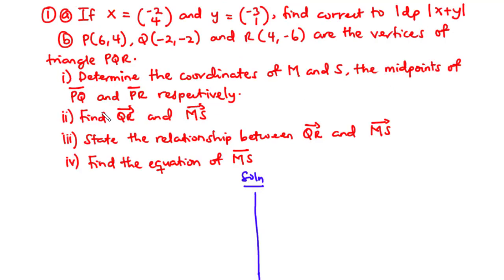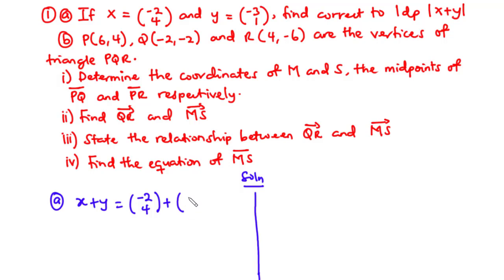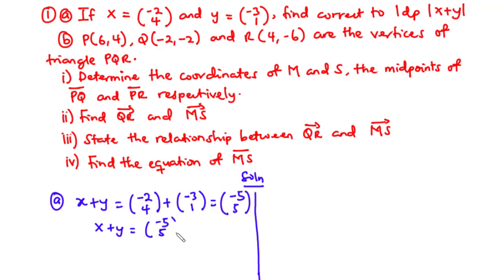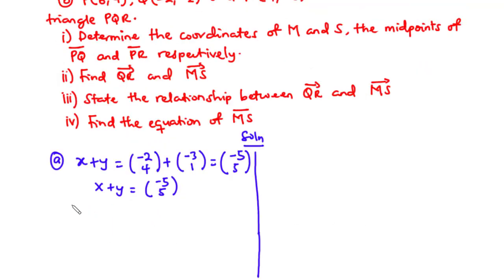For 1a we are asked to find correct to one decimal place the magnitude of vector x plus y. So we have vector x plus y: vector x is (-2, 4) and vector y is (-3, 1). This becomes negative 2 plus negative 3 is negative 5, and 4 plus 1 is 5.